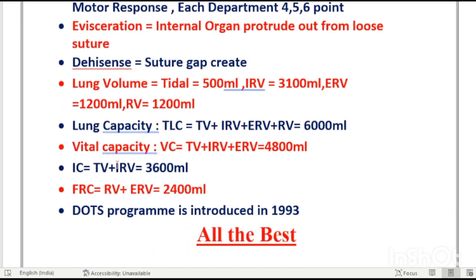Lung volumes: tidal volume (TV) 500 mL, inspiratory reserve volume (IRV) 3100 mL, expiratory reserve volume (ERV) 1200 mL, residual volume (RV) 1200 mL. Total lung capacity is 6000 mL. Vital capacity = total minus RV = 6000 − 1200 = 4800 mL. Inspiratory capacity = TV + IRV = 3600 mL. Functional residual capacity = RV + ERV = 2400 mL.